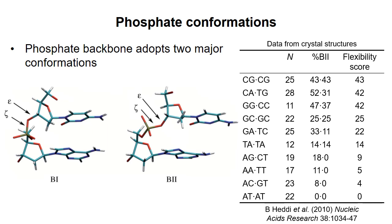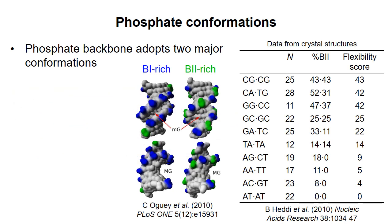Why does this matter? The shape of the major and minor grooves is strongly influenced by the conformation the backbone is in. This figure shows a B1-rich double helix on the left and a B2-rich double helix on the right. You can see that the minor groove is quite narrow in the B1-rich structure and the shape of the major groove is different. This will affect protein binding — for example, if binding of a protein requires a major groove with the shape like the B2-rich double helix, then certain sequences that can't adopt this conformation will preclude protein binding.